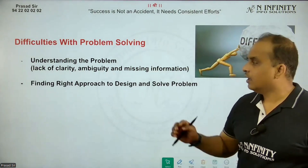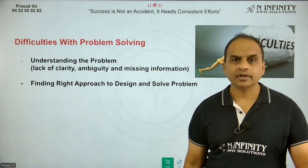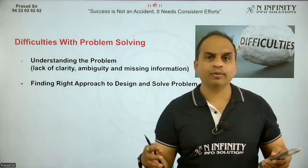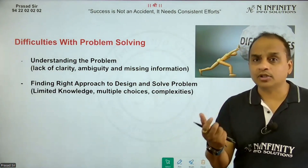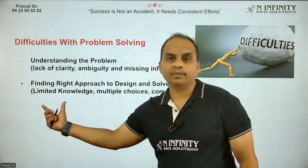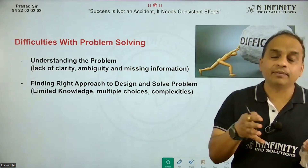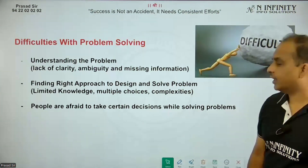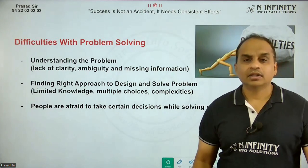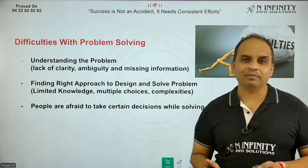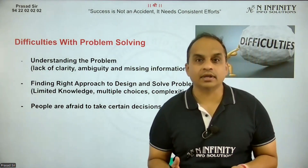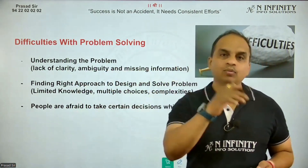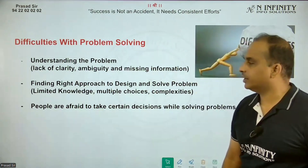That difficulty will put a major burden on solving the problem — because if you can't properly understand the problem, you can't give a proper solution. The next difficulty is finding the right approach to design and solve the problem. We need to find alternative approaches, and you may not be able to find the right one due to limited knowledge about the domain, multiple choices, or the complexity of the problem solutions. Another difficulty is that people are sometimes afraid to take decisions while solving the problem. Decision making is very important, and the fear of whether a decision will lead to the right solution often stops people.